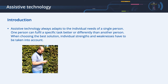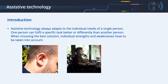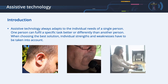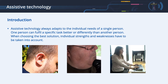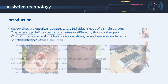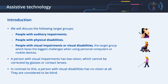Assistive technology always adapts to the individual needs of a single person. One person can fulfill a specific task better or differently than another person. When choosing the best solution, individual strengths and weaknesses have to be taken into account. As we cannot discuss every individual scenario, we will discuss the following target groups.